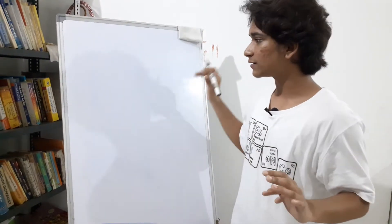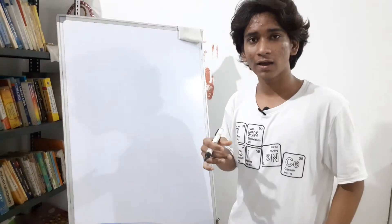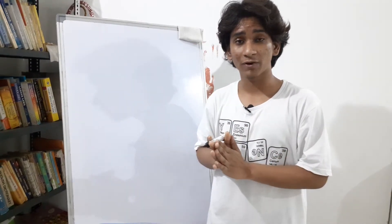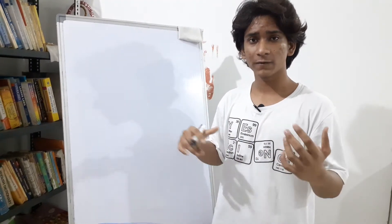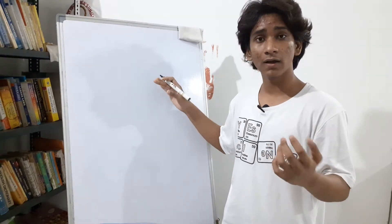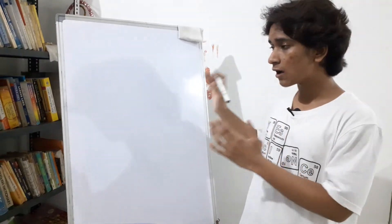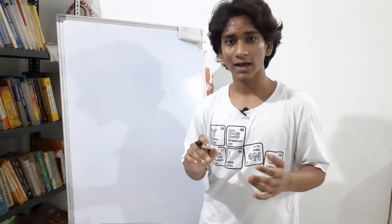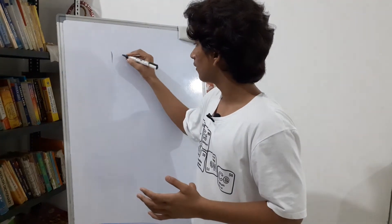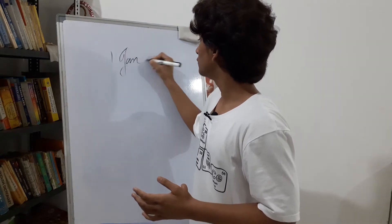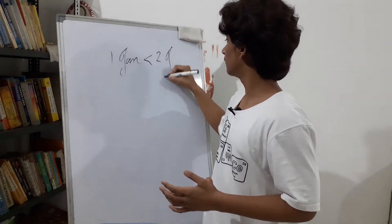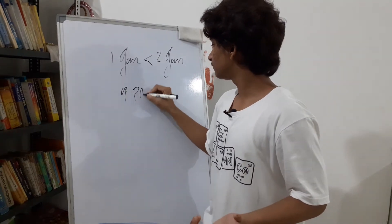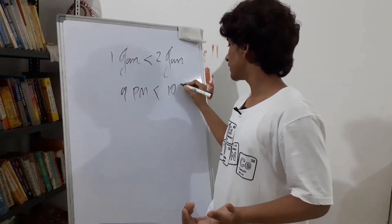The main thing to state here is that you're using a library — a library that allows you to compare dates and times. In my project I'm using Python's datetime library, but whatever your language or framework, you should have a library for it. For example, in Python's datetime library, one Jan is less than two Jan, or 9 p.m. is less than 10 p.m.